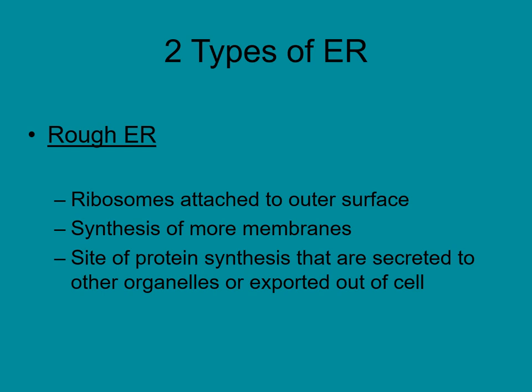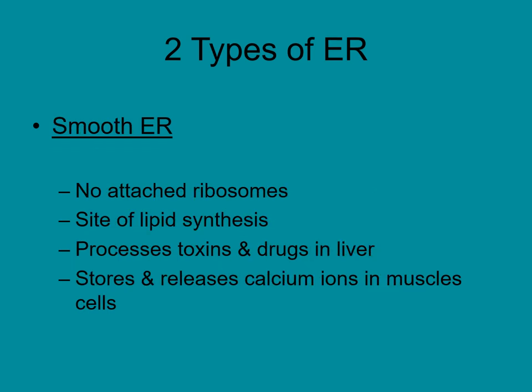Most proteins made on ribosomes attached to the rough ER are going to be exported or secreted out of the cell. The smooth ER has a smooth surface with no ribosomes. Its main functions include lipid synthesis and helping to process toxins and drugs. In the liver, the smooth ER is heavily involved with processing toxins and drugs. In muscle cells, the smooth ER is involved with storing calcium that must be released for muscle contraction to occur.